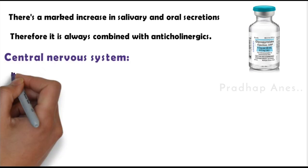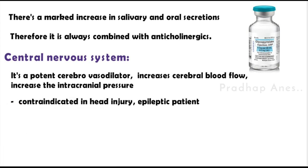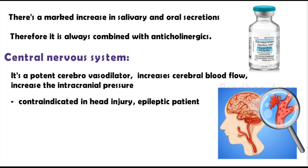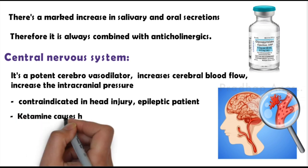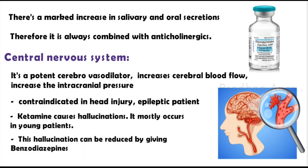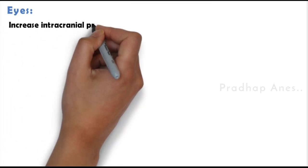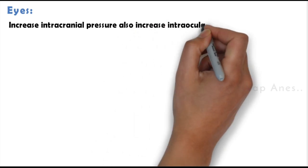Central nervous system: Ketamine is a potent cerebrovasodilator, so it increases cerebral blood flow and intracranial pressure. It is therefore contraindicated in head injury and epileptic patients. Ketamine causes hallucinations, mostly occurring in young patients; this can be reduced by giving benzodiazepines, which act on GABA receptors, increasing chloride ions and causing suppression of nerve activity. Eyes: Increased intracranial pressure also increases intraocular pressure, so ketamine is contraindicated in glaucoma patients.